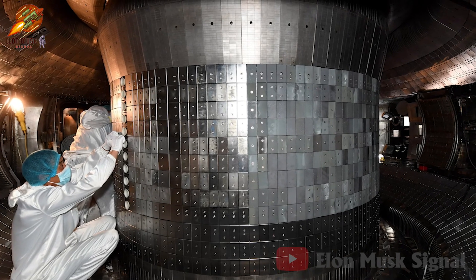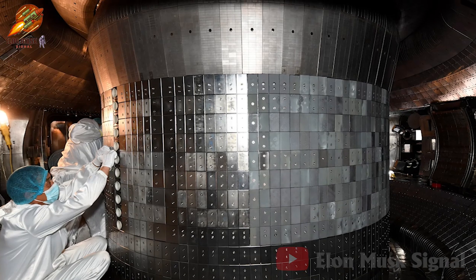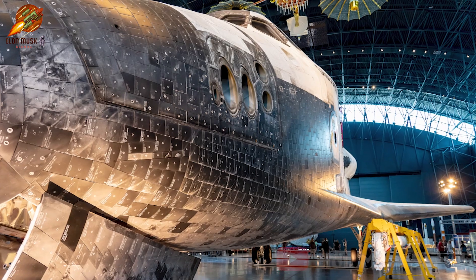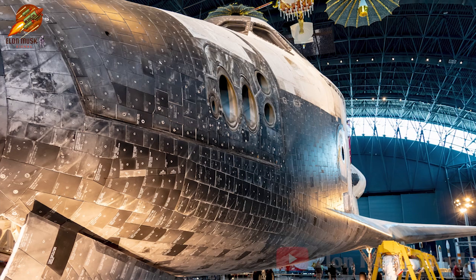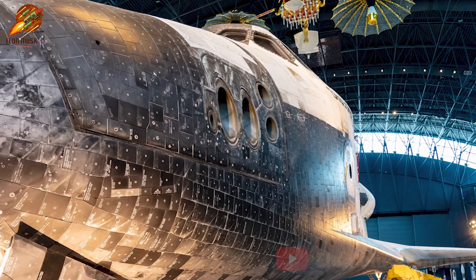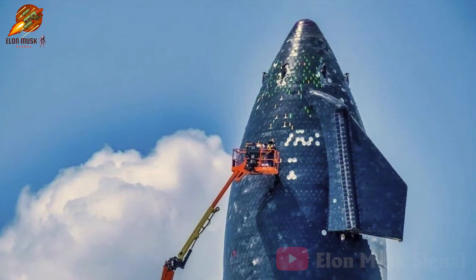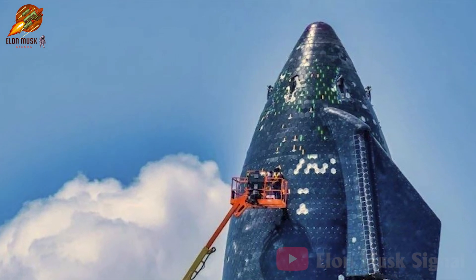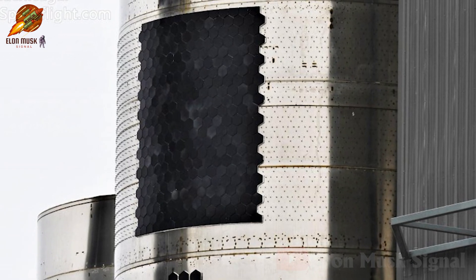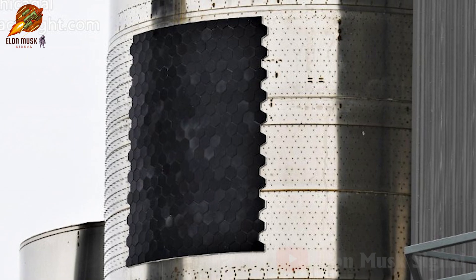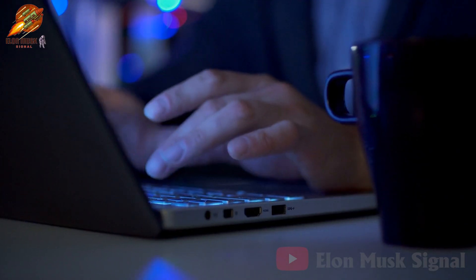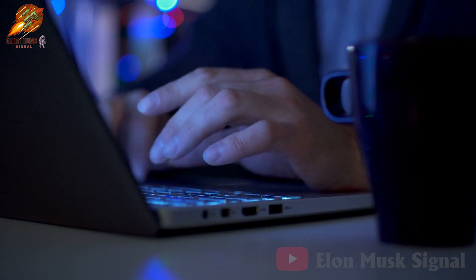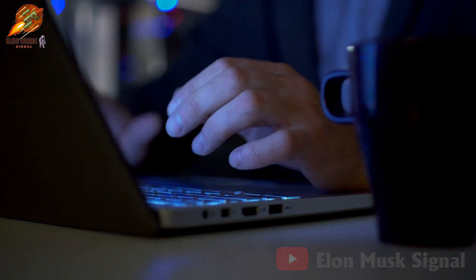SpaceX has been studying improvements to the heat shield long before Starship's fourth test flight. However, unlike the Space Shuttle, which had a complex design with a large number of differently shaped tiles, Starship is moving towards a simpler, easier to produce and maintained solution. This represents a significant advantage for SpaceX in the space race. What are your thoughts on these new improvements to Starship? Share your opinions in the comments below and stay tuned for more exciting updates.